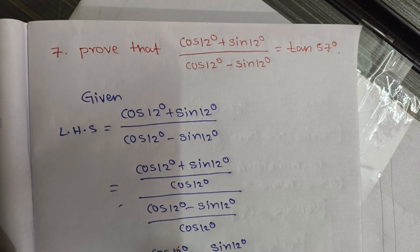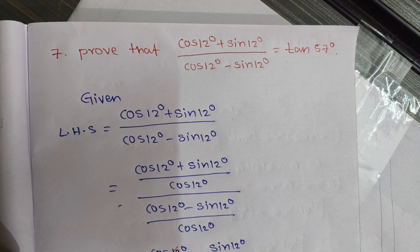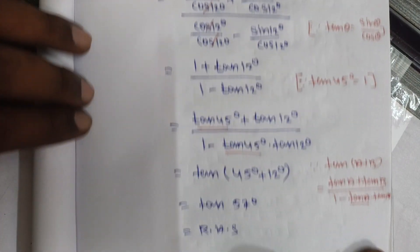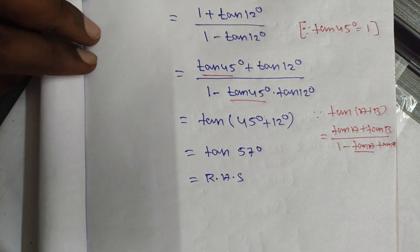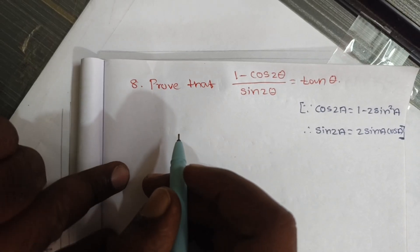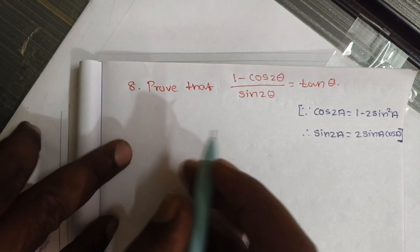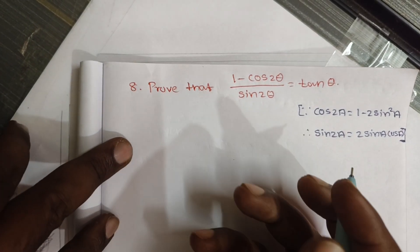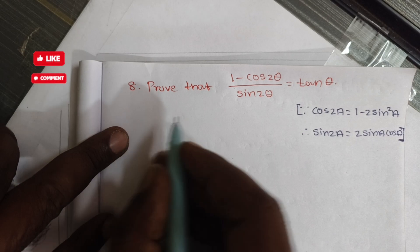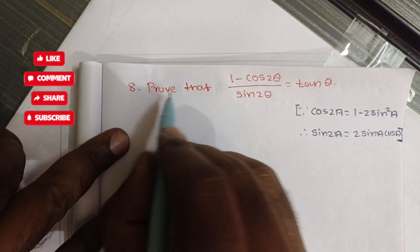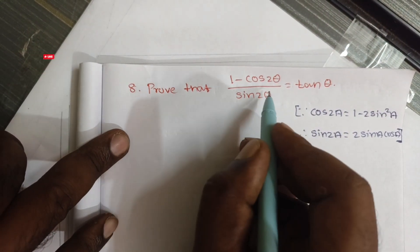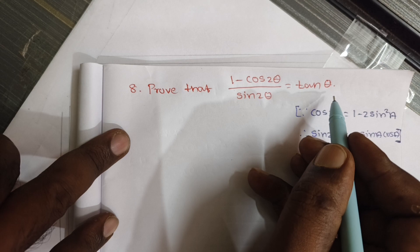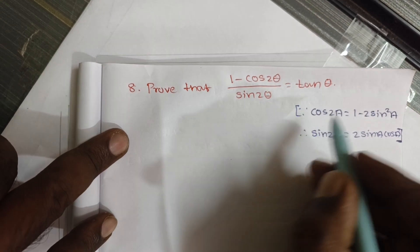This is a 3 marks important question. Now, through that we also need to prove: 1 minus cos 2 theta divided by sin 2 theta is equal to tan theta.